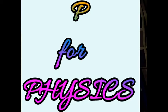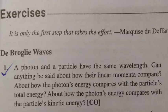Hello everyone. In this video I'm going to discuss problem number one of chapter 3, 'Wave Properties of Particles,' from the book 'Concepts of Modern Physics' by Arthur Beiser. As you can see in this picture, the problem says: a photon and a particle have the same wavelength. Can anything be said about how their linear momenta compare, about how the photon's energy compares with the particle's total energy, and about how the photon's energy compares with the particle's kinetic energy?